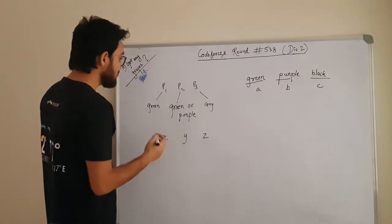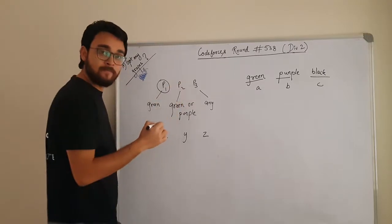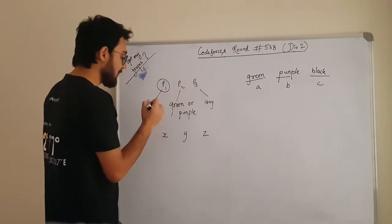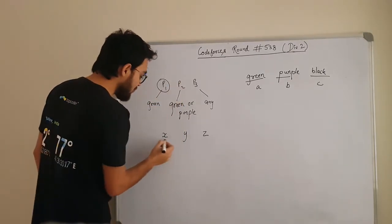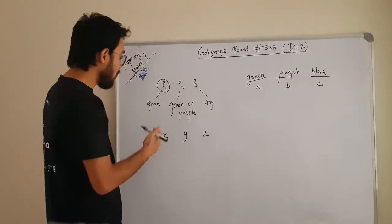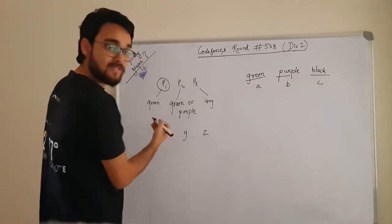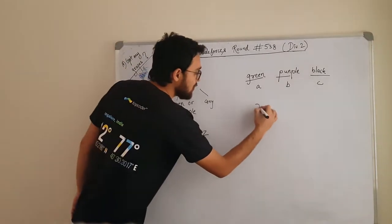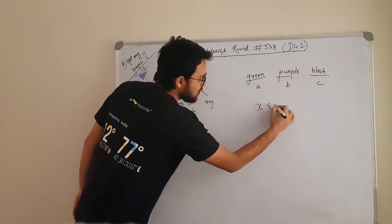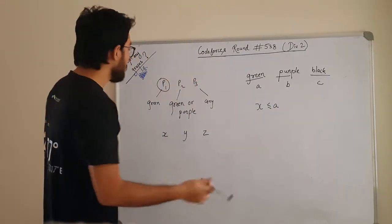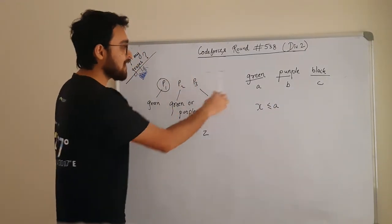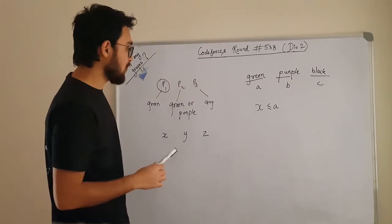Now as we can see, the person P1 only likes green grapes, and his requirement is X grapes. So we can take all the grapes from the green section only. To satisfy this requirement, the equation will be X needs to be less than or equal to A. Why? Because person 1 can only take grapes from the green grapes section.